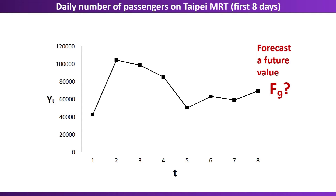In contrast, suppose that I need to forecast or fill in the value for time point 3. Maybe it's missing because it wasn't collected, or maybe that data was corrupted. So I might use forecasting to fill in that number. In that case, we can consider using data from before and after that time period — from time periods 1 and 2, but also from time periods 4, 5, 6, 7, and 8. That is one big difference between forecasting a future value and filling in or forecasting a past value.